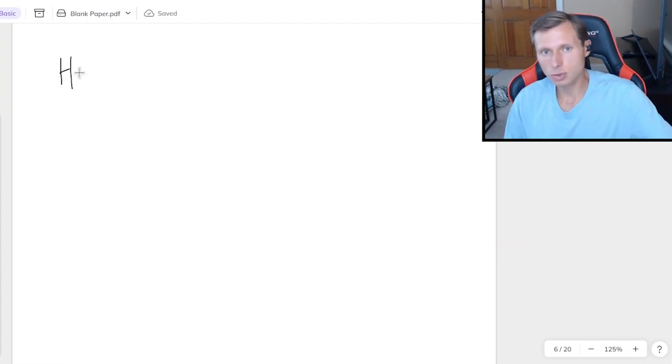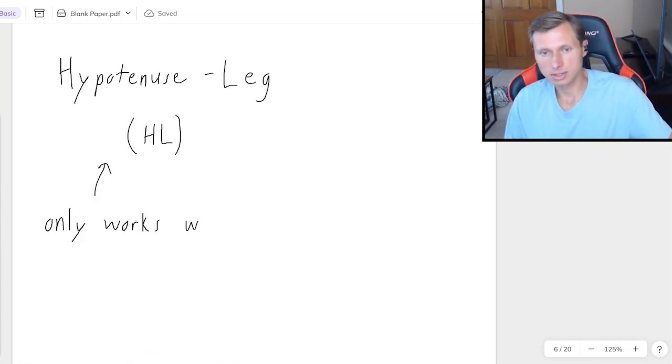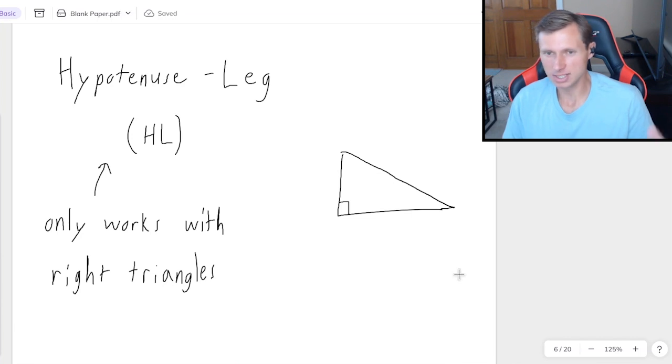And then the last one we have is called hypotenuse leg, or HL for short. And you need to know that this one only works with right triangles. In other words, the triangle needs to have a right angle in order to use hypotenuse leg. For all of the other triangle congruency theorems, it does not need to be a right angle. It's optional.